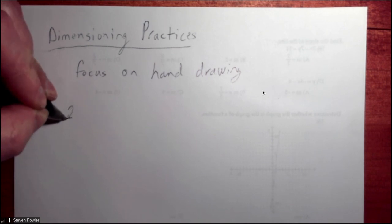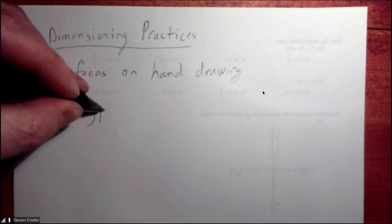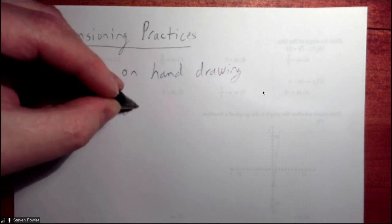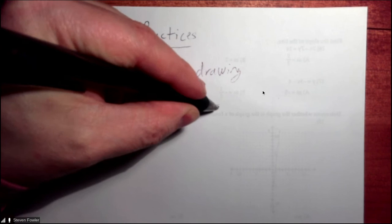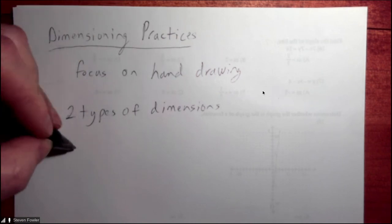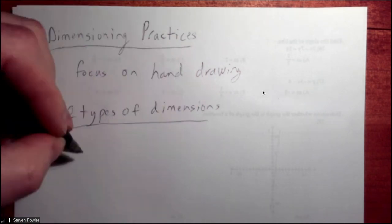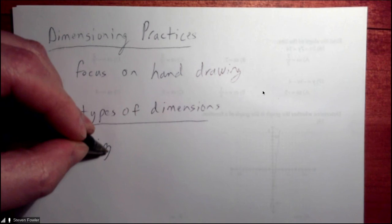So let's talk about what are the principles here. There are two types of dimensions, the two main categories of dimensions that we might consider. The first one is what we call a size dimension.